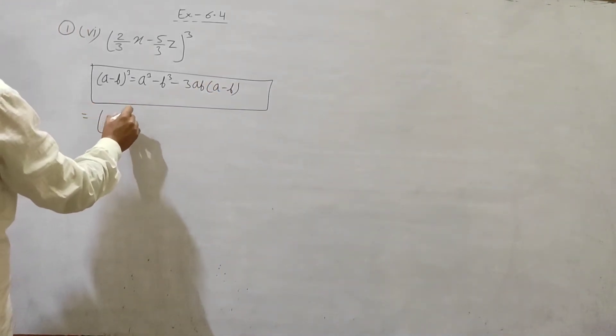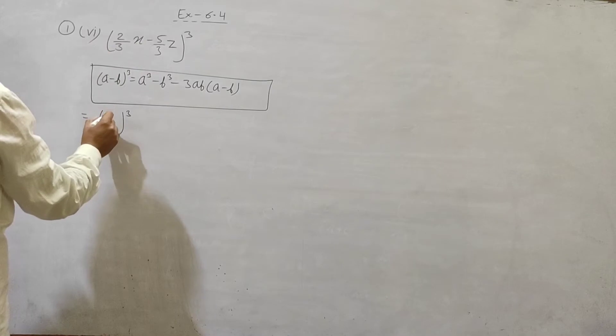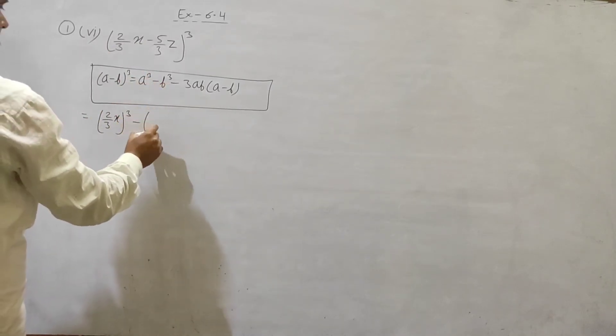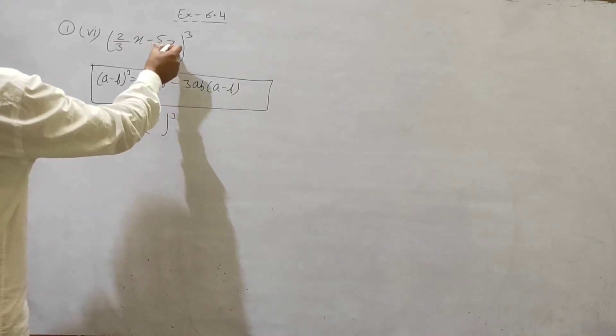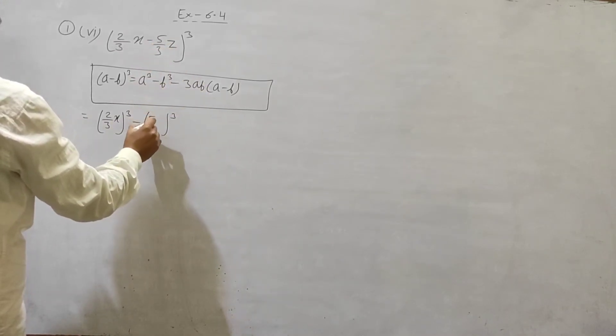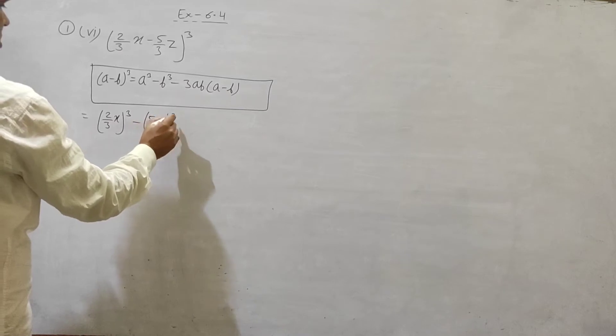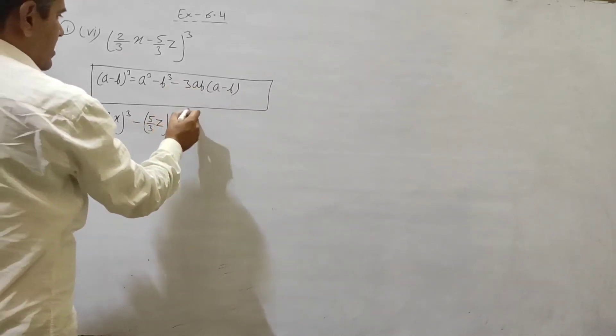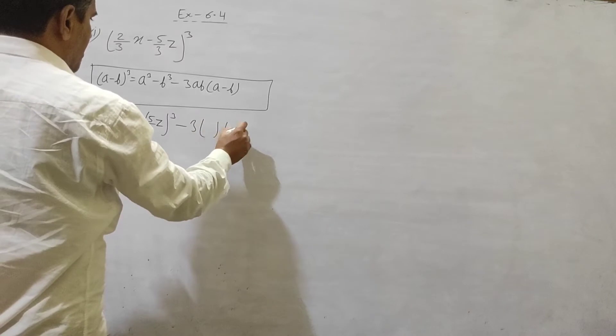A cube - cube of first value, first a hai, 2 by 3x whole cube minus b cube. B, the second value, minus 5 by 3z whole cube, minus 3 multiply a multiply b.